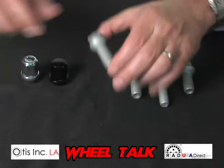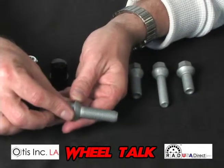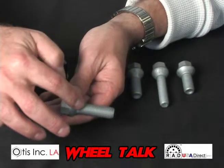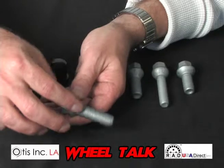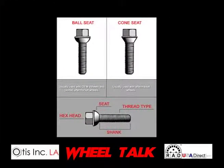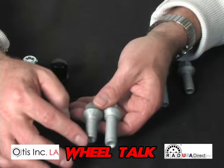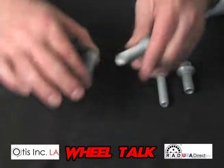There are three parts to a lug bolt that we need to know. We need to know: A, the thread pitch; we need to know the seat — is it a cone seat or is it a ball seat? Then we need to know the shank length — how long do I need the shank to be in order to secure the wheel to my car?